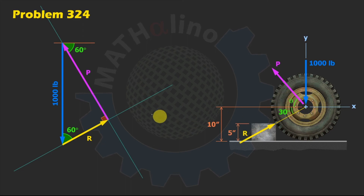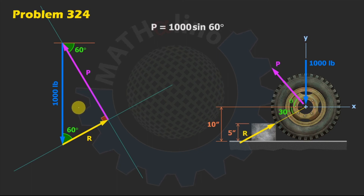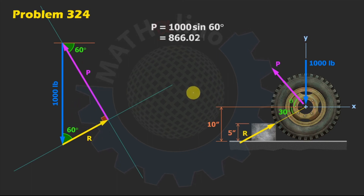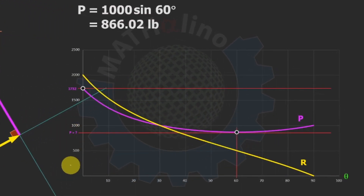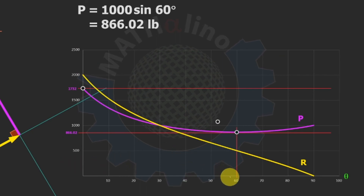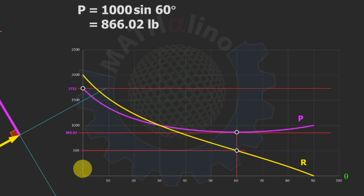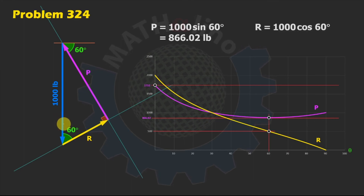From this perpendicular triangle, P equals 1,000 sine 60 degrees = 866 pounds. This is the minimum value of P. For R at theta = 60 degrees: R equals 1,000 cosine 60 degrees = 500 pounds, which matches both the graph and the sine-law formula.